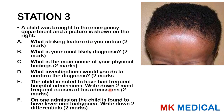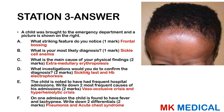Station three: a child was brought to the emergency department and a picture is shown. What striking feature do you notice? What is the most likely diagnosis? What is the main cause of your physical findings? What investigations would you do to confirm the diagnosis? The child has had frequent hospital admissions — write two most frequent causes. On one admission the child has fever and tachypnea — write two differentials. You may pause the video.